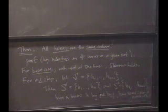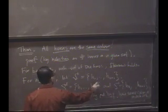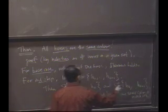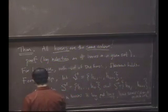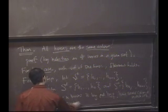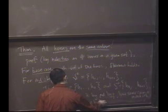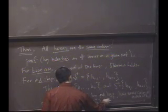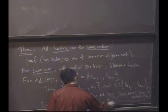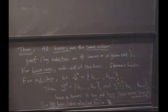Oh, great. But clearly H2 is in both sets. And so all these have the same color as H2, and all these have the same color as H2. So all have the same color as, in particular, H2. Done. As desired. All horses have the same color.